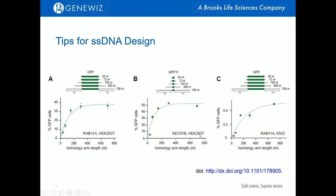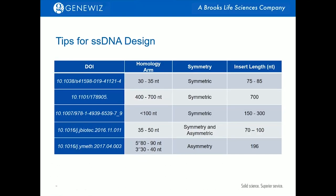For example, in HEK293 cell lines, when you knock in different lengths of insert, the optimum homology arm length is different. In general, the longer the knock-in sequence, the longer the homology arm should be. And when you compare figure A and figure C, you will see that when you knock in the same insert into the same protein target but in different cell lines, the optimal homology arm is different. So it has to be decided on a case-by-case basis. Reported values can at best serve as the starting point for your optimization, as it heavily depends on the genomic region you want to target and the biological system you are working in.